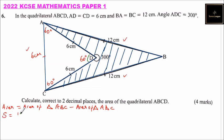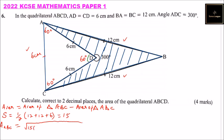We start with s equals one half of the sum of the three sides: 12 plus 12 plus 6, which equals 30 divided by 2, giving s equals 15. The area of triangle ABC using Heron's formula is the square root of 15 times (15 minus 12) times (15 minus 12) times (15 minus 6), which is the square root of 15 times 3 times 3 times 9, giving the square root of 1215.